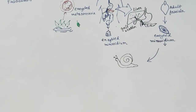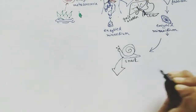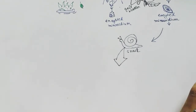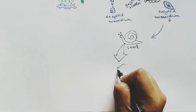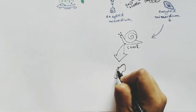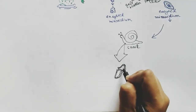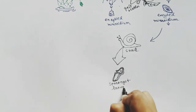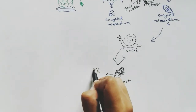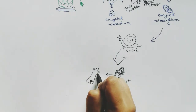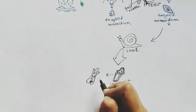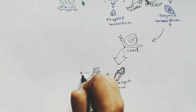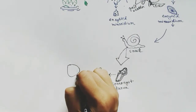The snail is the secondary host of Fasciola hepatica, and Fasciola hepatica spends its asexual life cycle inside the snail. After reaching the snail body, the cyst ruptures and from the miracidium it forms the sporocyst larva stage. After the sporocyst it becomes another type of larva inside the snail body, called the redia larva.